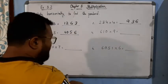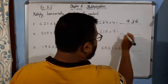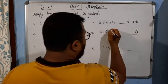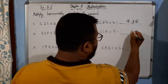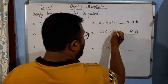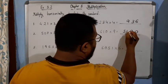Now come to this one. 9 times 0 is 0, so we will write 0. 9 times 1 is 9, we will write 9. Then 9 times 6 is 54, we will write 5 and 4.